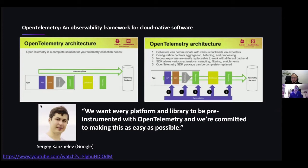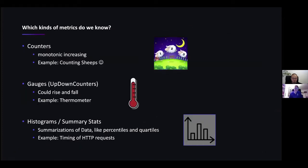Yes, surely. Metrics are numerical representations of the current state of an application. When we talk about metrics, we should differentiate between different types. At first, there are gauges — or in OpenTelemetry slang, up-down counters — which can be higher or lower than the preceding value. Therefore, they can be perfectly used for things such as measuring CPU load or the temperature inside a server room.